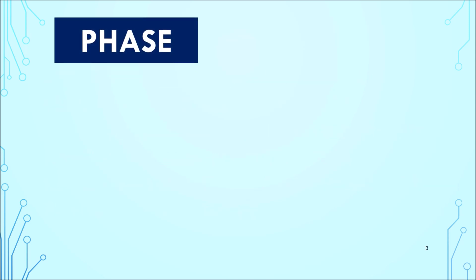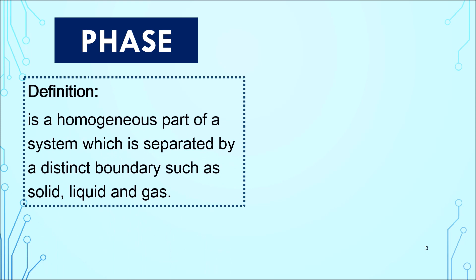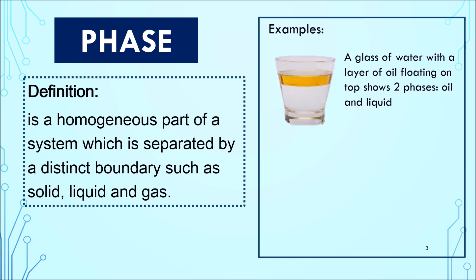Let's begin by defining phase. Phase is a homogenous part of a system which is separated by a distinct boundary such as solid, liquid and gas. For example, when you have a glass of water with a layer of oil floating on top, it shows two phases: oil and liquid.